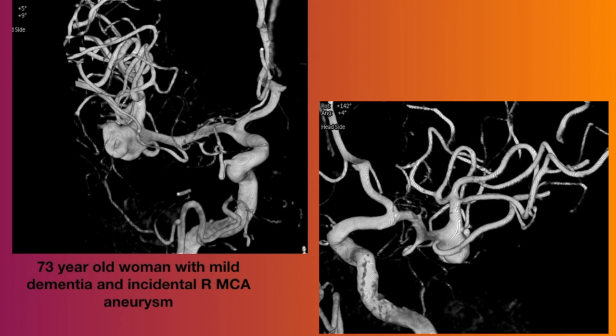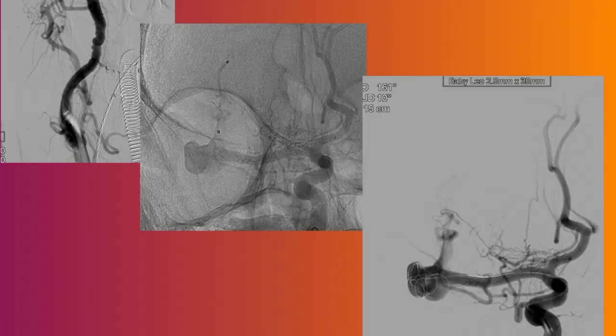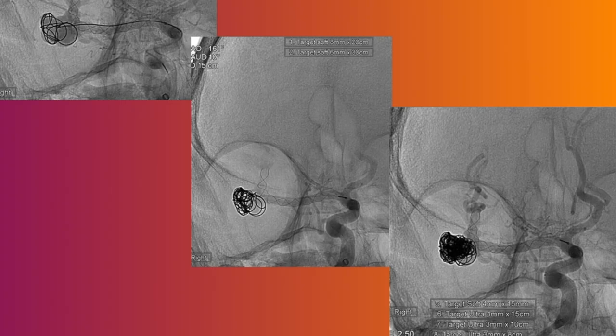Another MCA bifurcation aneurysm, very wide neck — I was contemplating whether to use a flow diverter or an intrasaccular device. I wasn't very happy to use an intrasaccular device here because I thought it wouldn't give a good result. I placed a Baby Leo stent across the aneurysm with a jailed catheter and coiled it — this aneurysm is going to get cured with this treatment.